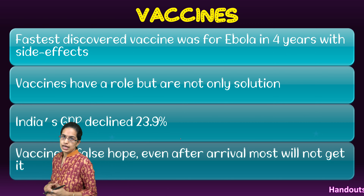Vaccination has become a key issue. This has been the worst pandemic seen in years, and even for Ebola, the fastest a vaccine was created was four years, with numerous side effects. Vaccines have a role but are not the only way to eliminate a disease. India's GDP has been declining significantly, and countries are rushing toward a vaccination system, though a good vaccine typically takes 10–12 years to develop, raising concerns about the shortened timeline.